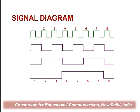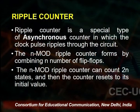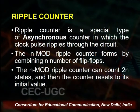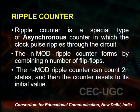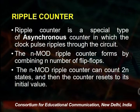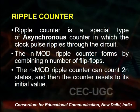The signal diagrams formed by synchronous and asynchronous counters show a regular interval pattern in each — the duration can change but the regularity of the signal pattern is clear. A ripple counter is a special type of asynchronous counter in which the clock pulse ripples through the circuit. An n-mod ripple counter is formed by a combination of n flip-flops and can count 2 to the power n states before resetting to its initial value.